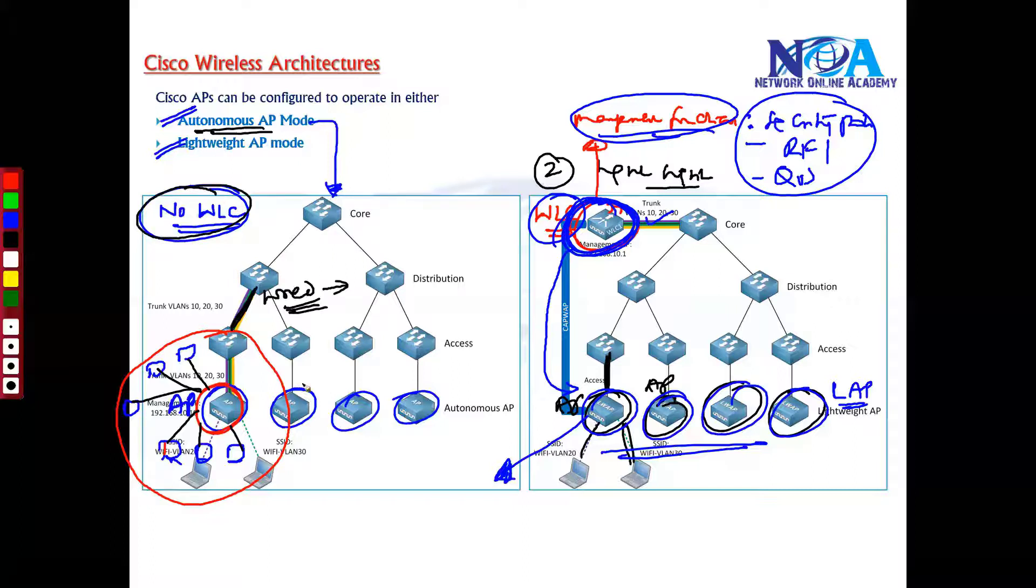In autonomous mode, individual access points will do all the jobs. Every access point will do the actual forwarding job and at the same time management-related jobs are present on each and every access point. Most of the time we'll be going with the second option, that is lightweight access point mode.